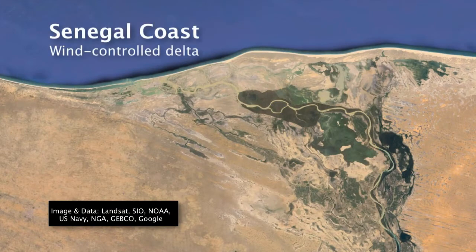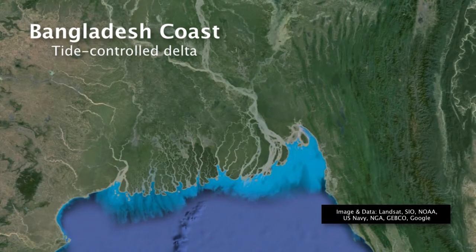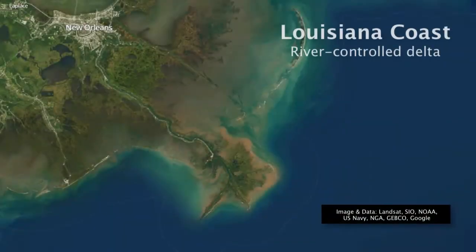For deltas in windy environments, we tend to see a smooth and straight coastline as the wind seems to shave and remove any protruding features along the coast. Tides have their own signature on deltas and will act to encroach onto the land, leaving the deltas with a somewhat concave inland appearance. A river-controlled delta, on the other hand, extends the landmass into the ocean, particularly if a river is full of sediment like the Mississippi, which is pushing its presence into the Gulf of Mexico.